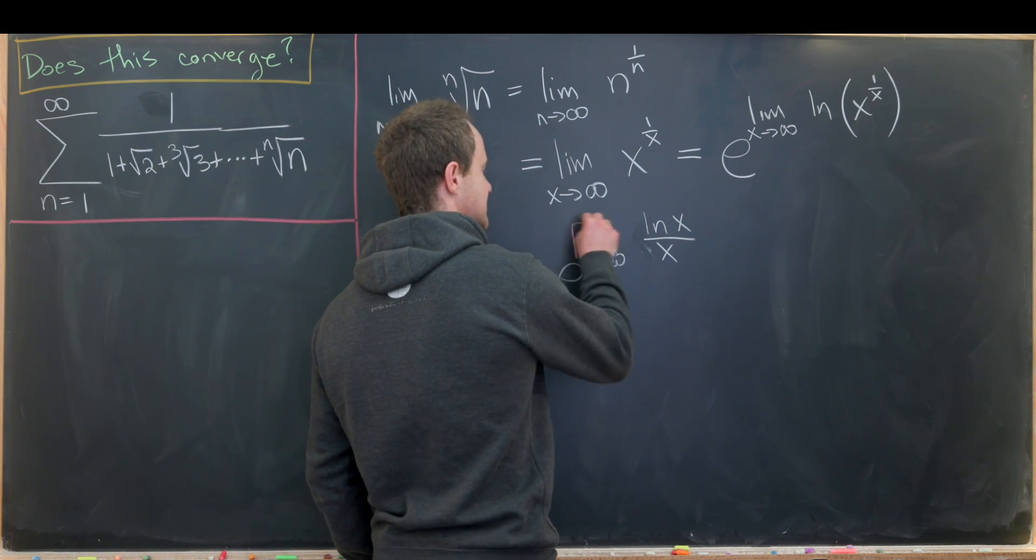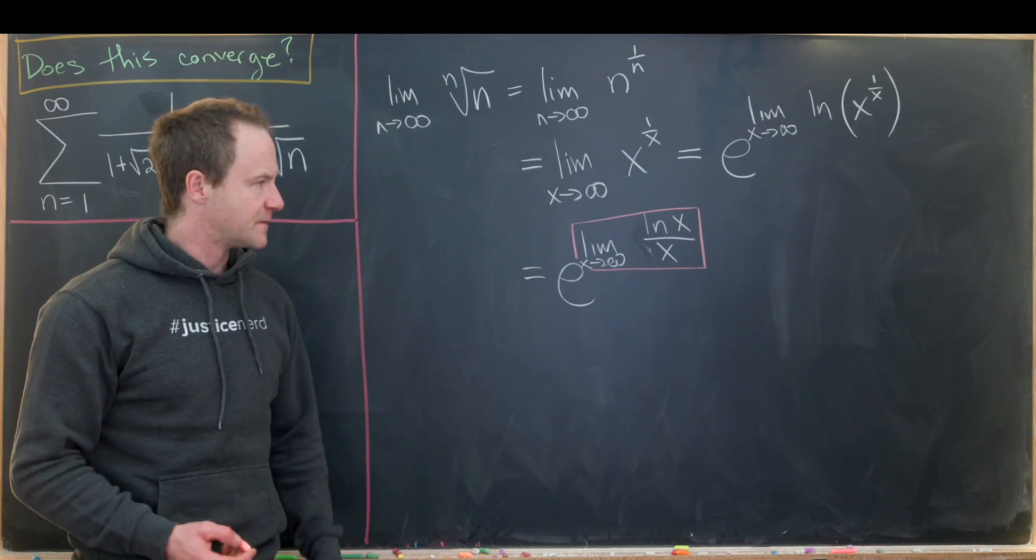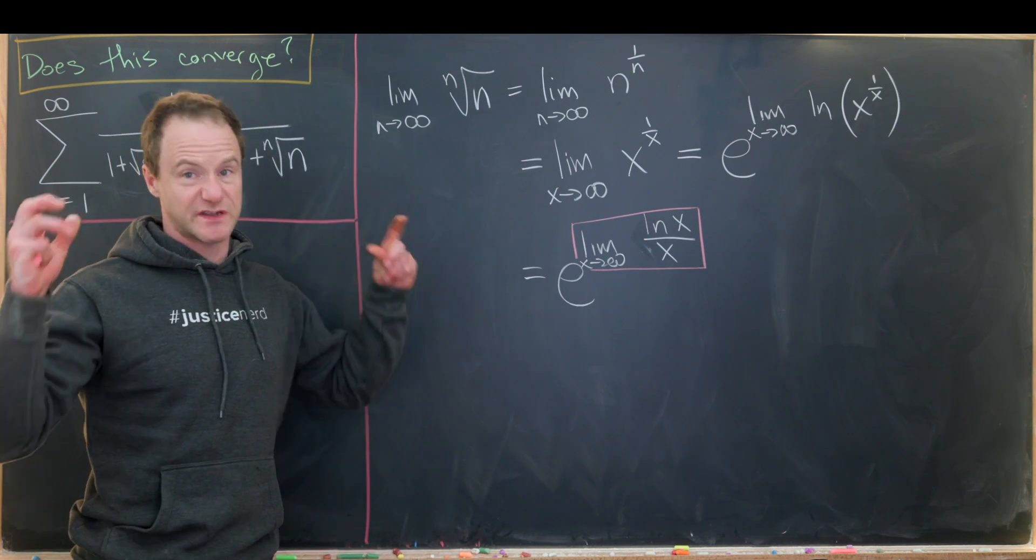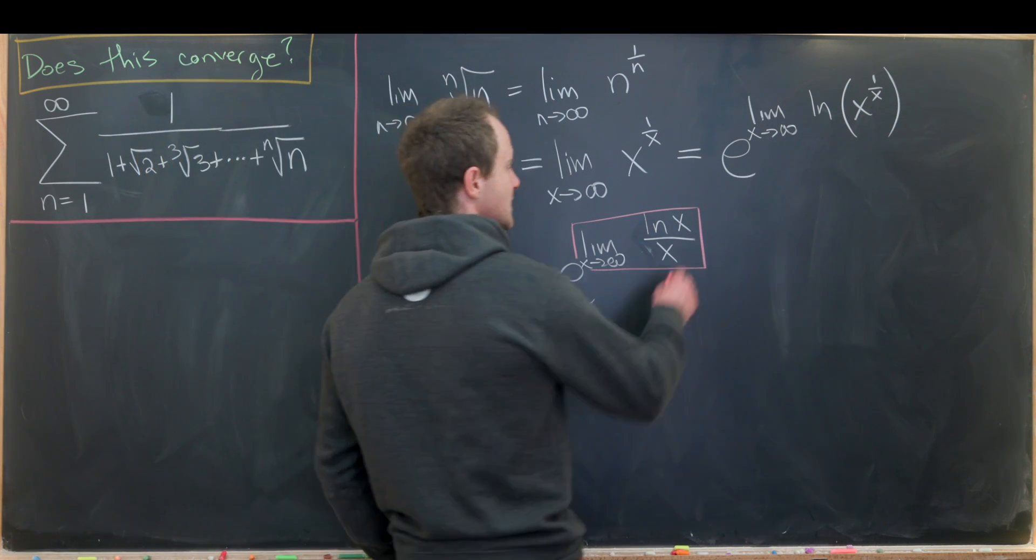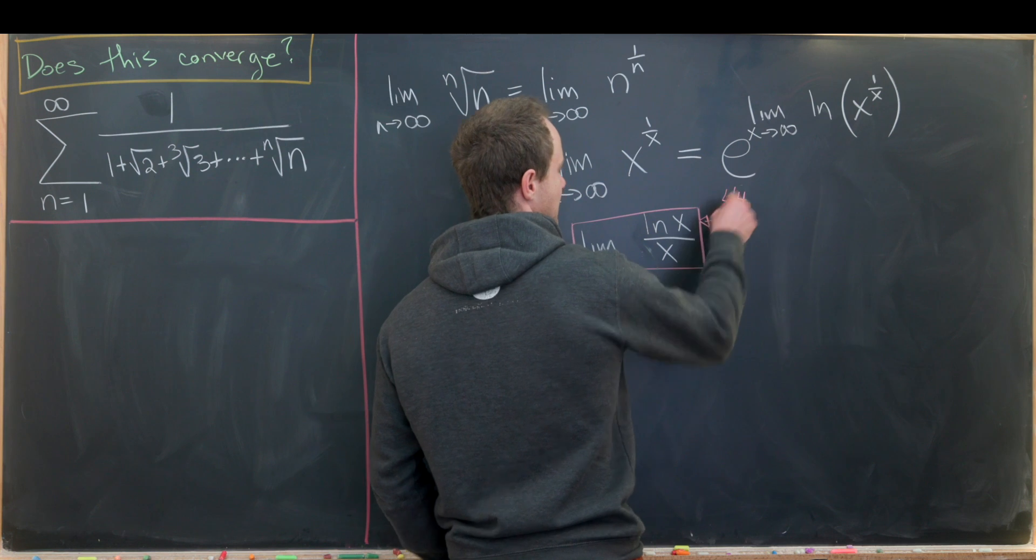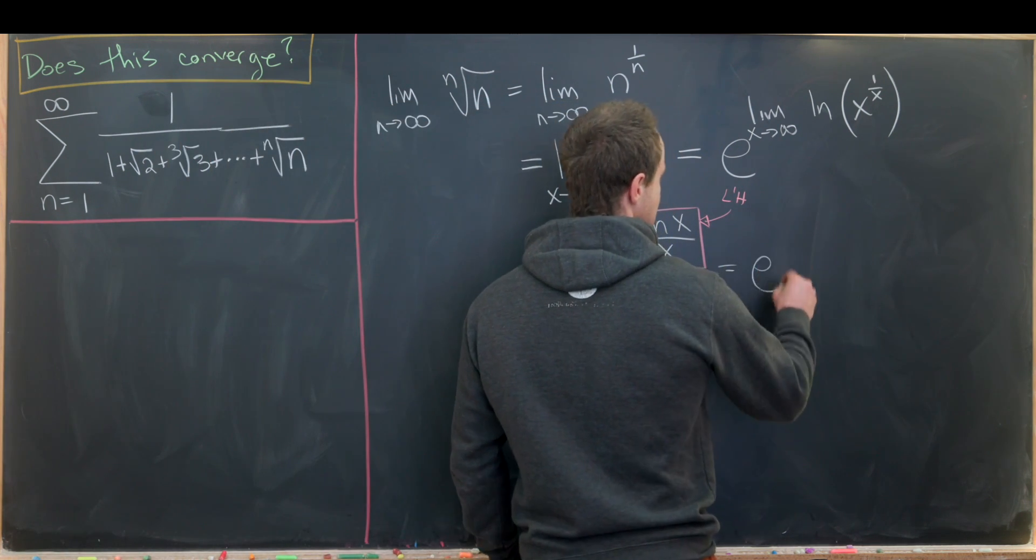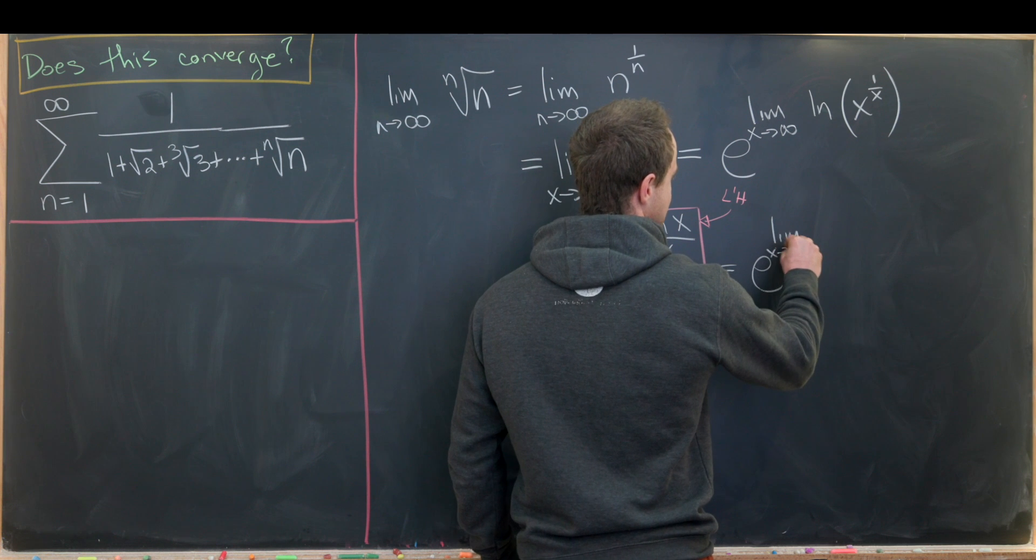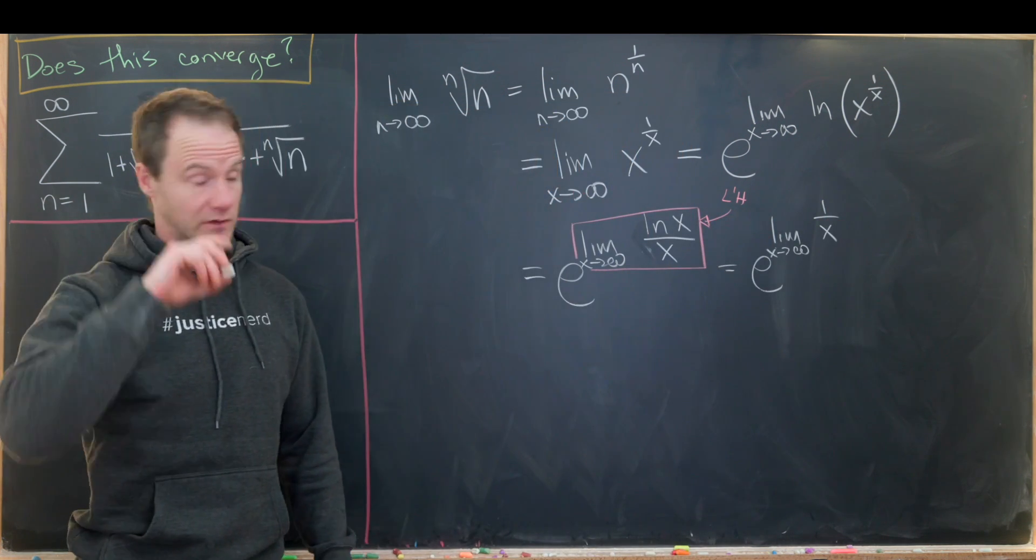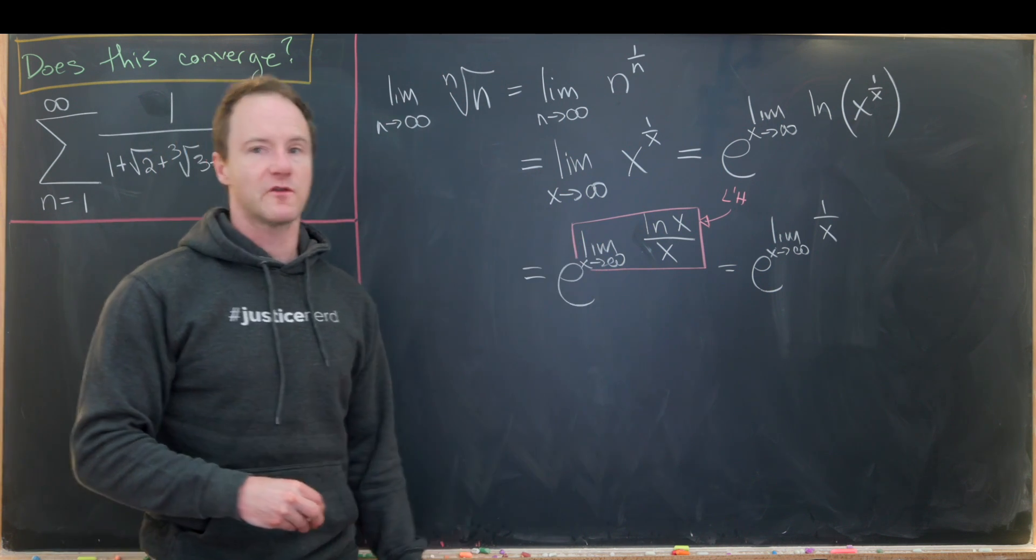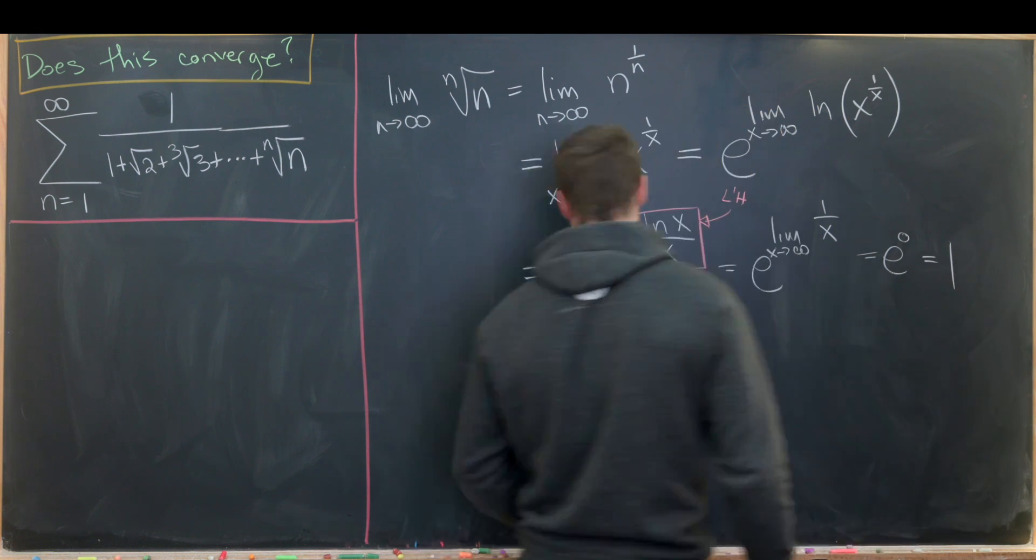And now we can see that this exponentiated limit is of type infinity over infinity. The natural log is one of the smaller objects that approaches infinity as its argument approaches infinity. So since it's type infinity over infinity, we can use L'Hopital's rule in order to simplify it. So that's going to give us e to the limit as x approaches infinity of 1 over x over 1 just by taking derivatives. But as x goes to infinity, 1 over x goes to 0. So this gives us e to the 0, which is equal to 1.